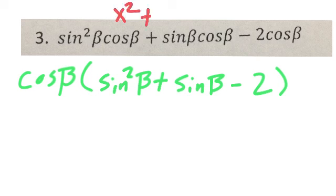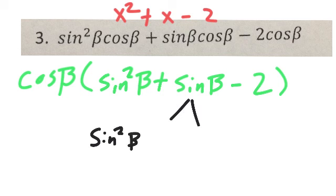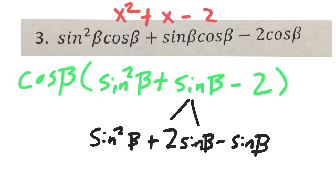So again, what I'm thinking about, x squared, plus x, minus 2. So what multiplies to be negative 2, added or subtracted, is a 1. Well, that's going to be a positive 2, and a negative 1. So if I do the a times c method, and then rewrite that b term, this is going to be sine squared of beta, plus 2 sine of beta, minus sine of beta, minus 2. The sine beta can be rewritten as 2 sine beta minus sine beta. Again, just like the a times c method.